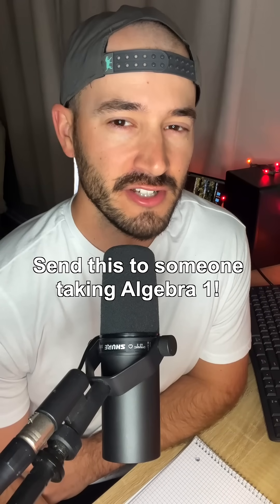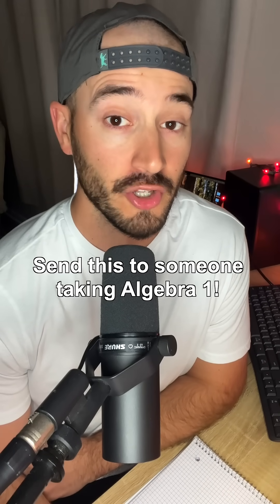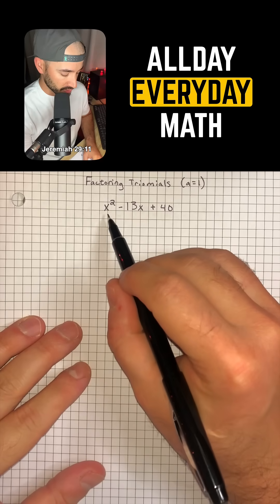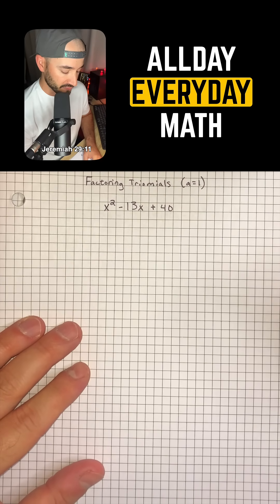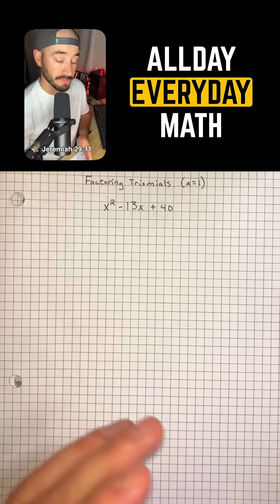If you're taking Algebra 1 this year and you're still not sure how to factor trinomials, don't worry, I got you. So we have the trinomial x squared minus 13x plus 40 and we want to factor that out into two sets of parentheses.